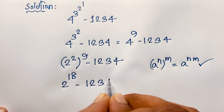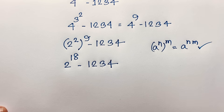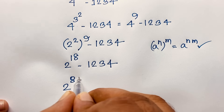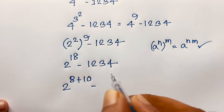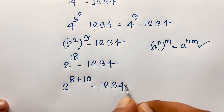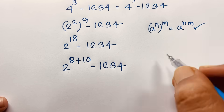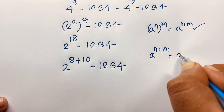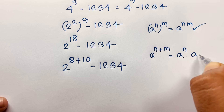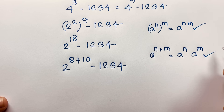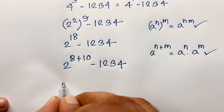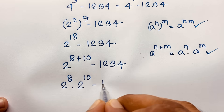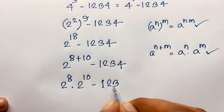Then here 2 to the power 18. This 18 will be 8 plus 10, minus 1234. Then I apply this math formula: a to the power n plus m equals a to the power n times a to the power m. If I apply this math formula here, this expression will be 2 to the power 8 times 2 to the power 10, minus 1234.